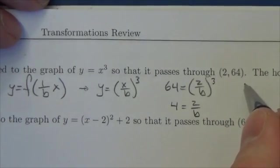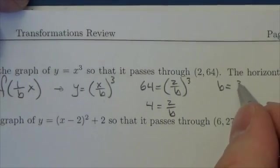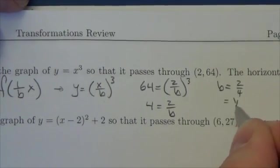Multiply up by b, divide by 4, I'll get b is equal to, yeah, b is equal to 2 over 4, or b is equal to 1 half.